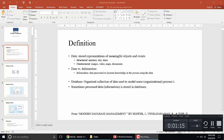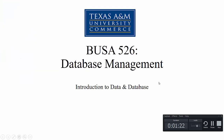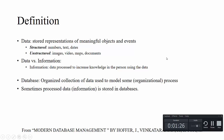Let's start with the basic definition of data. We call data a stored representation of meaningful objects and events. Basically, data is anything that is storable — it could be the number of students, or very complex things like videos or presentations. Data can be categorized into two groups: structured data (numbers, text, characters, dates) and unstructured data (documents, maps, videos, presentations, images).